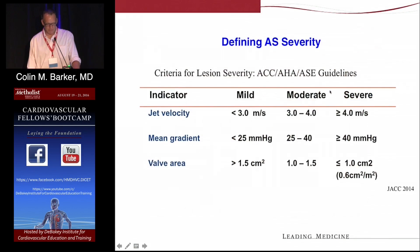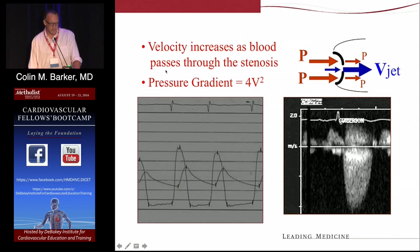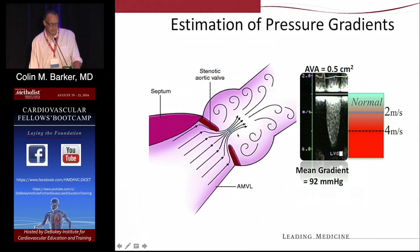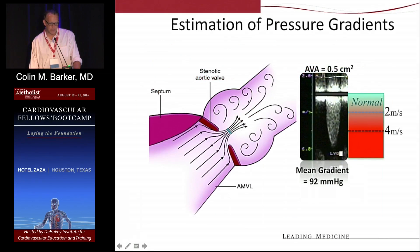The guidelines define aortic stenosis severity, and the most important thing to remember is what defines severe: a jet velocity greater than 4 meters per second, a mean gradient greater than 40 millimeters of mercury, or a valve area less than 1 centimeter squared — 4, 40, and 1. In both the cath lab and echo lab, velocity increases as blood passes through the stenosis and the pressure drops. You calculate the gradient by 4 V squared. It's like putting your thumb over the end of a hose.